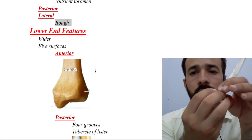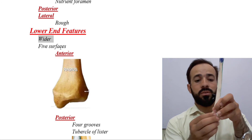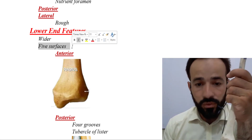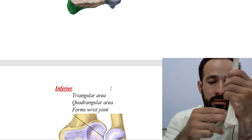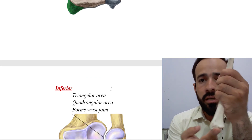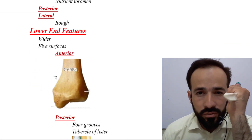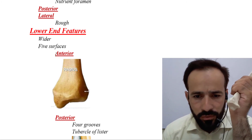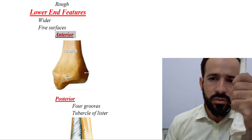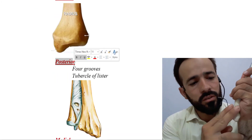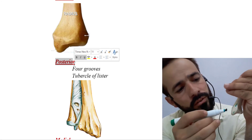The lower end of the radius is wider and has five surfaces: the anterior surface, the posterior surface, the medial surface, the lateral surface, and the inferior surface. The anterior surface is smooth. The posterior surface is slightly rough and has grooves in it — there are five grooves present on the posterior surface.